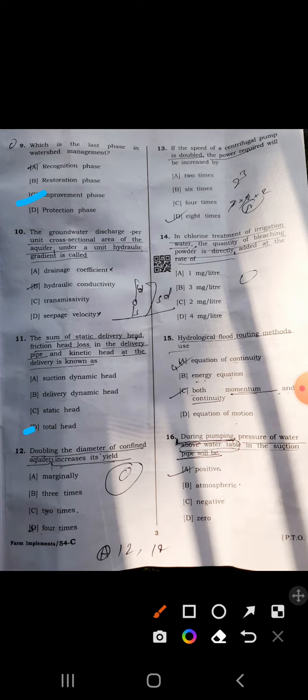Twelfth question: Doubling the diameter of the confined aquifer increases its yield marginally. The answer should be 10%, but it is not mentioned in this option, so A marginally is correct.